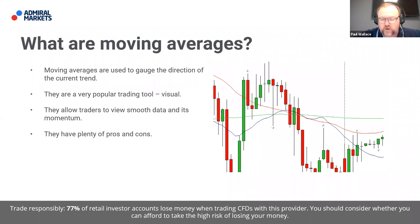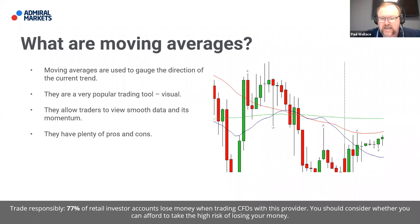Moving averages are used to gauge the direction of the current trend. They are a very popular trading tool because they are visual, and the vast majority of us are visual in our primary decision-making. They are very simple to see and understand. Especially for those starting out, it allows traders to view smooth price data and get an impression of momentum. Like any trading indicator, they have both pros and cons — we'll use them as a gauge of trend direction and an indication of momentum.